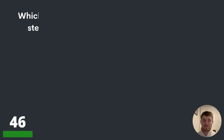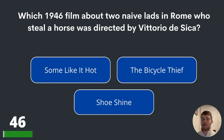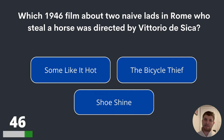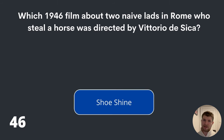Question forty-six. Which 1946 film about two naive lads in Rome who steal a horse was directed by Vittorio de Sica? Some Like It Hot, The Bicycle Thief or Shoeshine? The answer is Shoeshine.